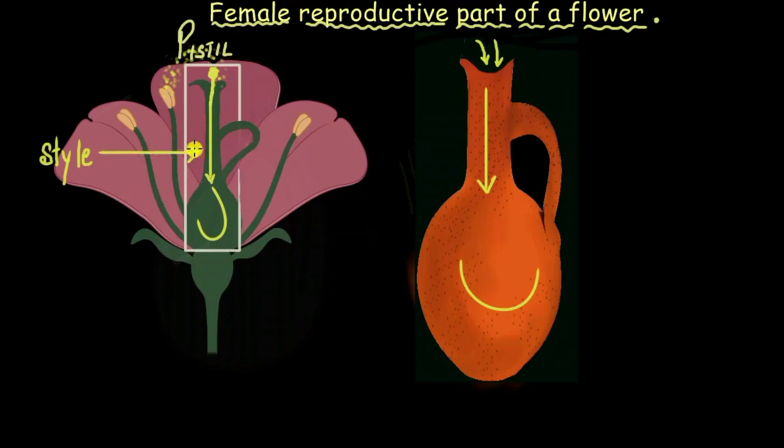Now the other parts of the pistil has also got specific names. This upper area, well let me remove the jar like shape of pistil. There you go. Now this upper area is called stigma.